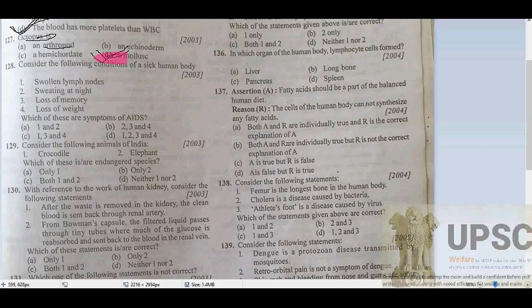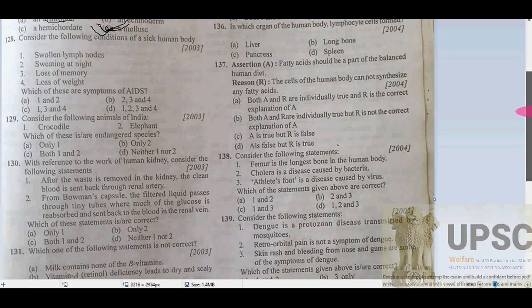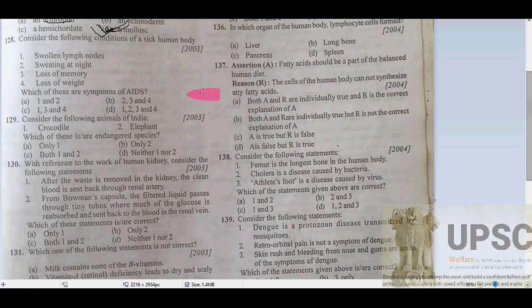The octopus is found at the bottom of the sea. It kills its prey using very poisonous saliva, and it can change its color. You can watch videos of octopus to understand how it changes its color from the heart.